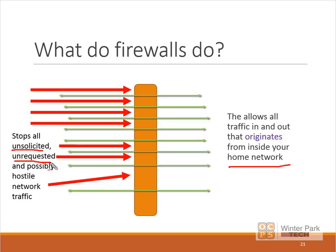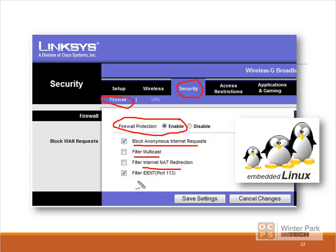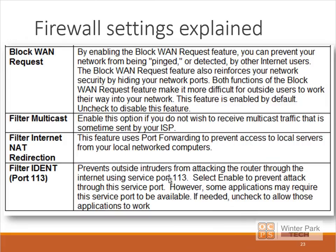Anything that comes from the outside that is unsolicited or unrequested — your router understands it's not coming from inside your home network — it will drop and block all of that traffic. In a typical business and enterprise environment, firewalls get much more complex, but fundamentally that's what your firewall is doing. You can enable or disable your firewall, and there are options such as blocking anonymous internet requests and filtering multicast.